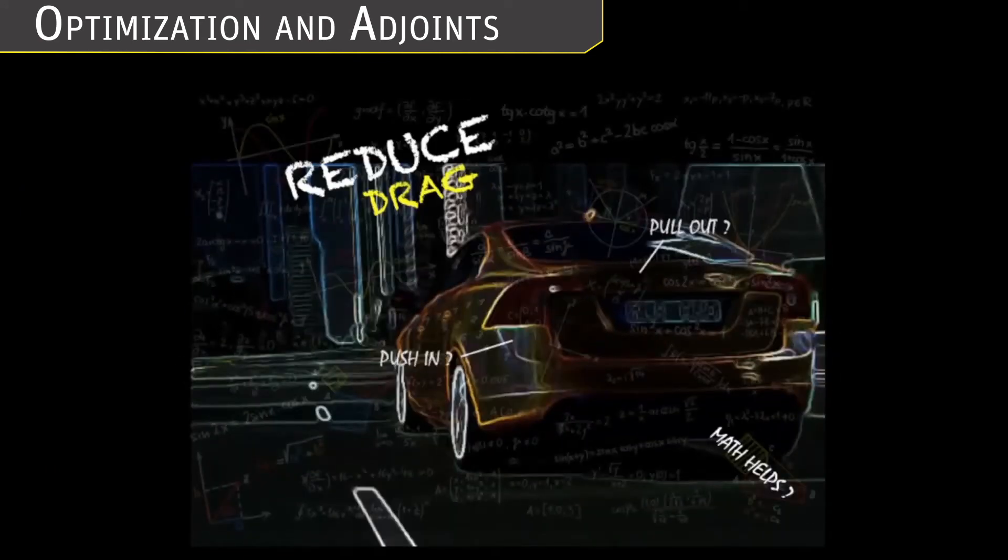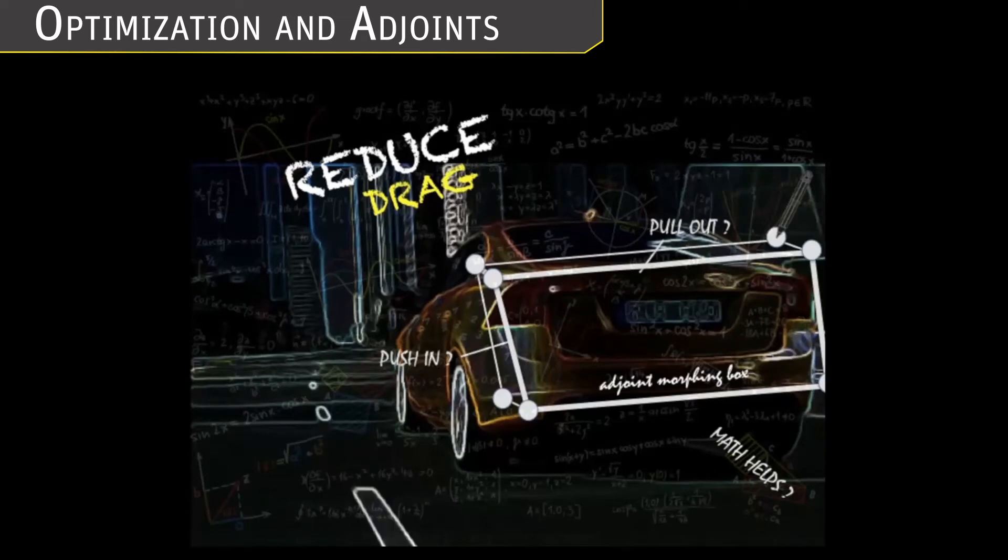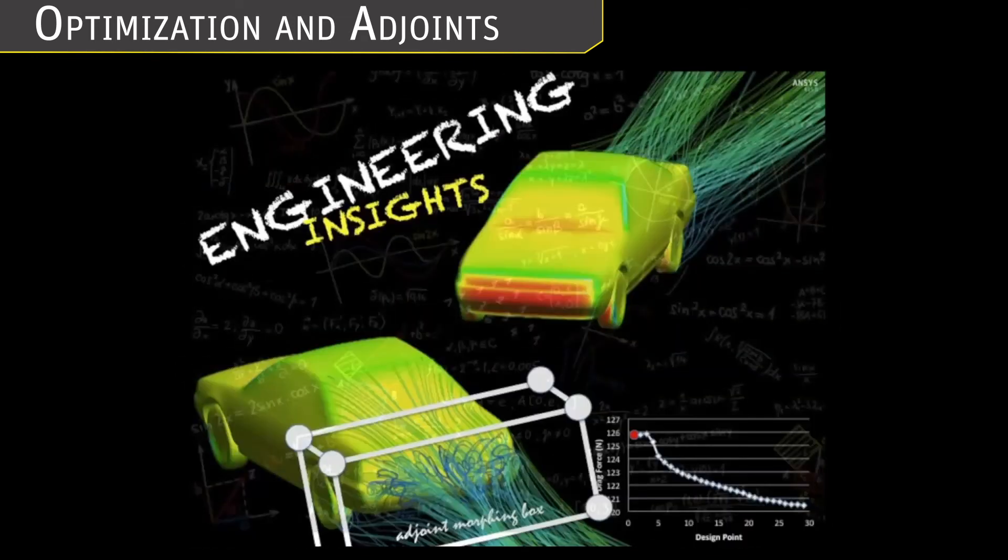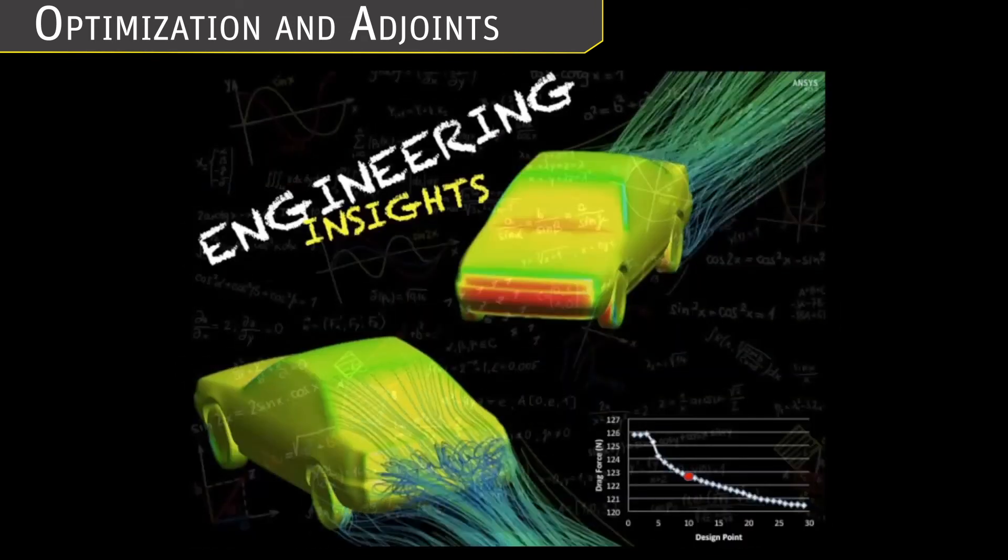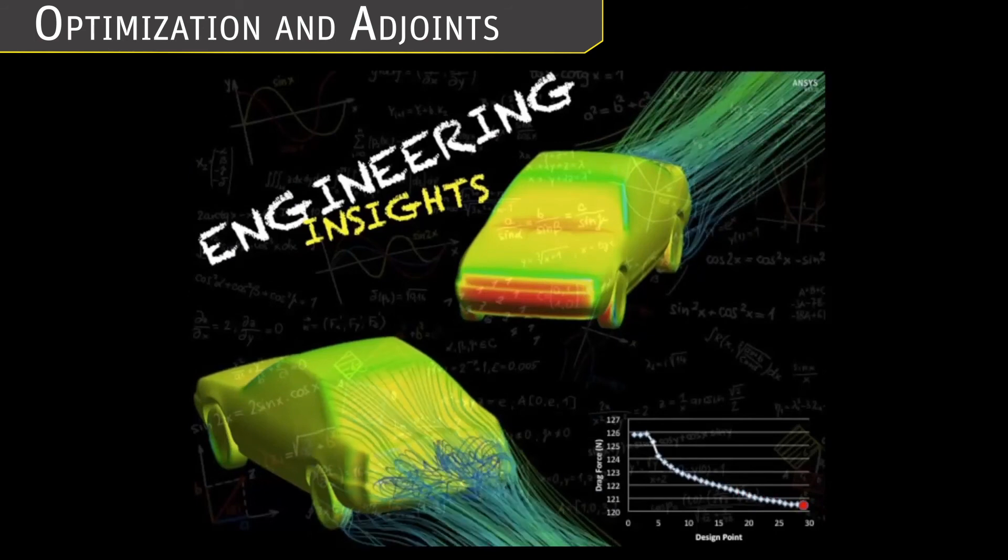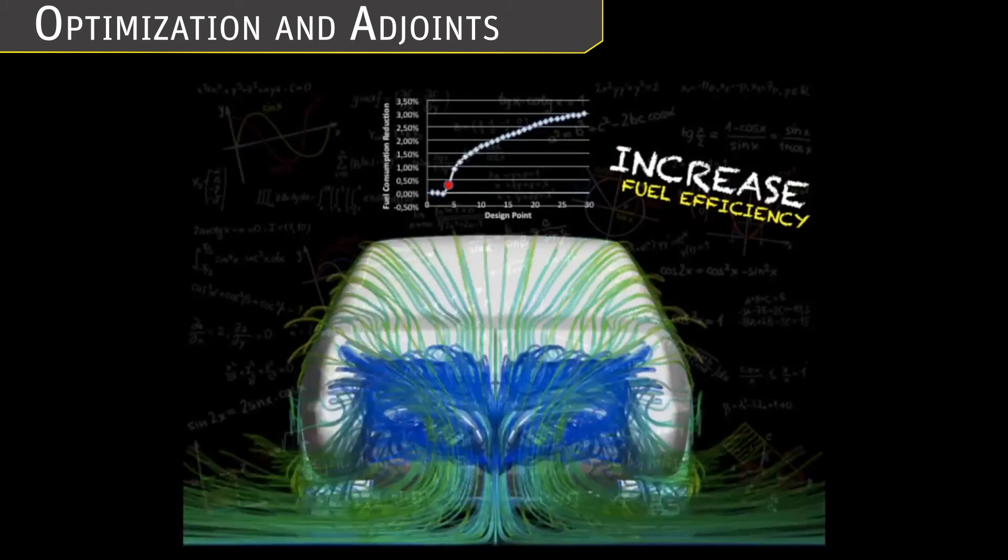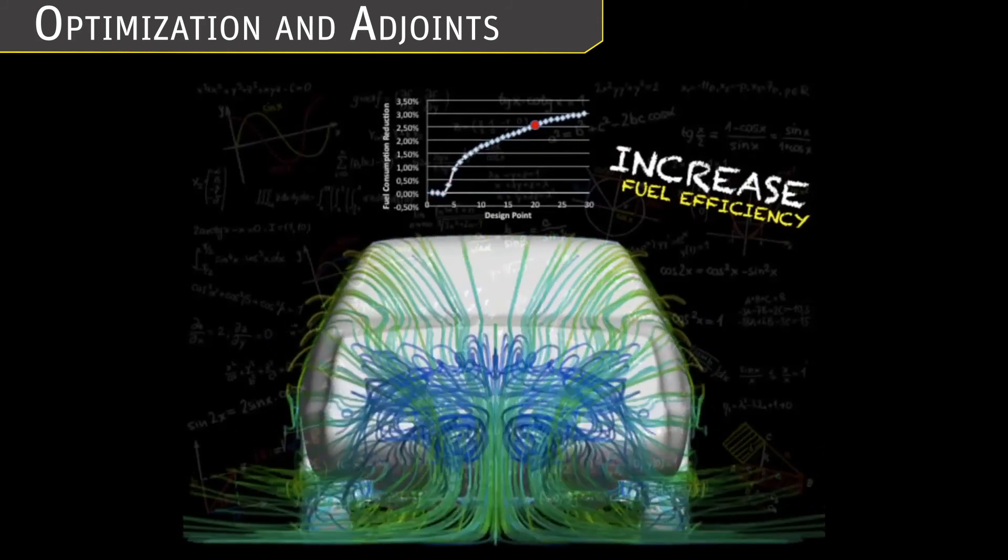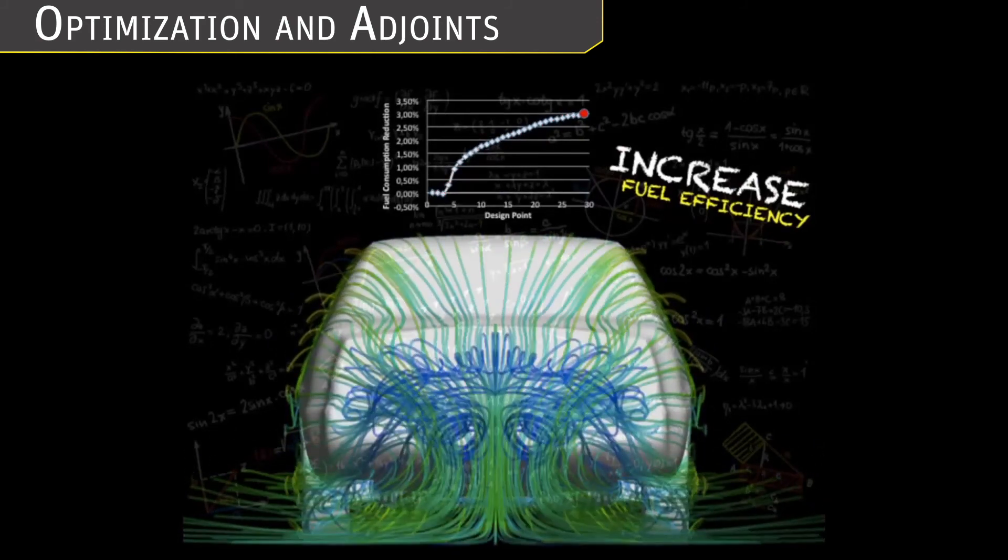ANSYS's adjoint solver is another industry-leading optimization tool that exactly points out areas where a vehicle shape needs to be changed in order to meet specified objectives such as reduction of aerodynamic drag. Using advanced numerical techniques and mathematical rigor, the adjoint solver finds optimization opportunities even in places that would have been difficult for an engineer to imagine.